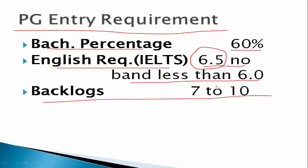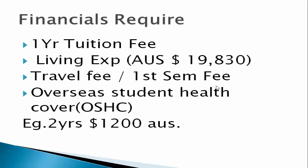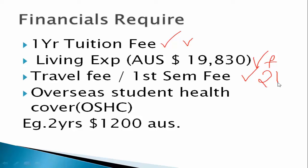For financial requirements, you have to pay one year's tuition fees upon receiving a letter of offer — this varies depending on the course. For living expenses, it is approximately 19,380 Australian dollars. Travel fees or first semester fees will be around 2,000 Australian dollars.